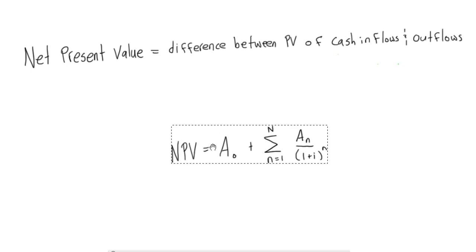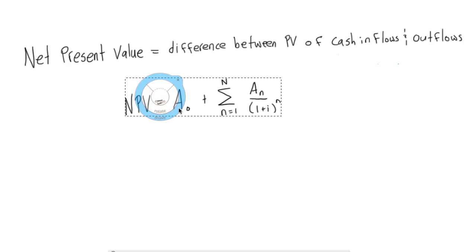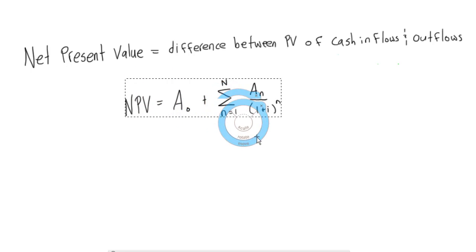The formula that we're going to be using is NPV equals A0 plus this summation stuff.